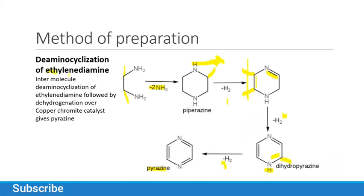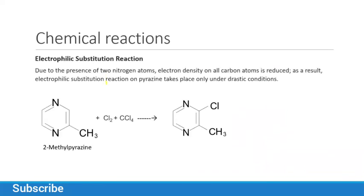Now for chemical reactions: because of the presence of two nitrogen atoms, the electron density on carbon atoms is reduced. That is why electrophilic substitution reactions of pyrazine take place only under drastic conditions — in very high or concentrated amounts, or with heating. Under normal conditions you will not get electrophilic substitution. For example, 2-methylpyrazine reacts with carbon tetrachloride and chlorine to give the final product, but only under drastic conditions.